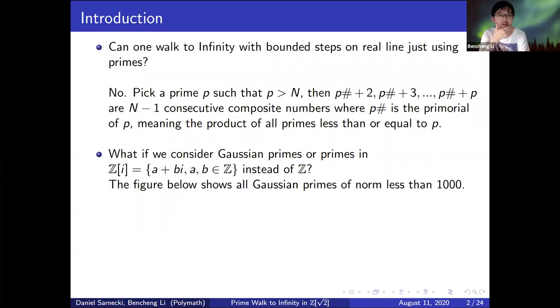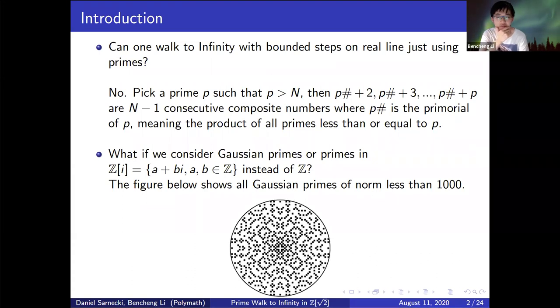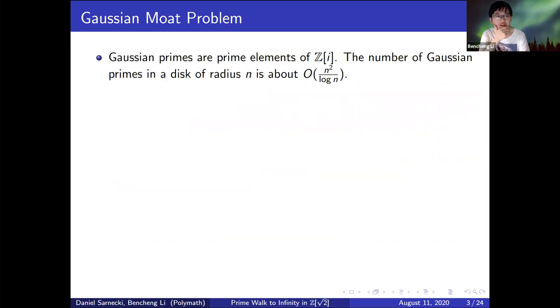Then what if we consider Gaussian primes or primes in Z[i] instead of Z? The figure here below shows all the Gaussian primes of norm less than 1,000. What would the answer be if we change Z to Z[i]? Can we walk to infinity with bounded steps on Z[i] just using the prime elements in the ring?